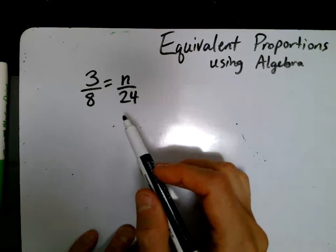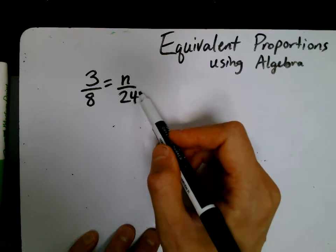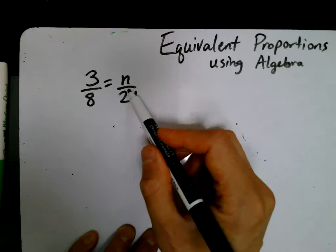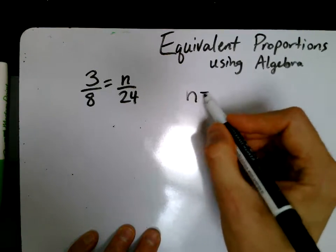So we could think of this just like an algebra problem where we're trying to solve for the variable, in this case n. We have here n divided by 24. We don't want n over 24. We just want n equals something, or something equals n.